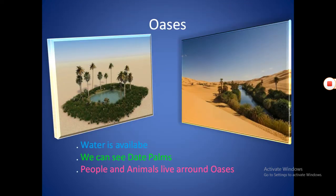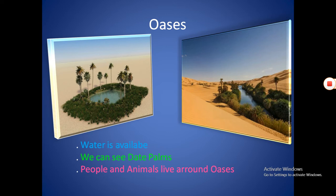Some places in the desert where water is available are called oasis. There we can find plants like date palms. Some people and animals live around an oasis. The camel is used as a means of transport in the desert.